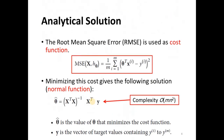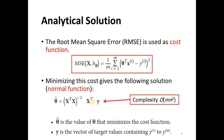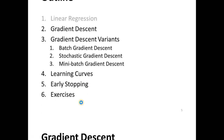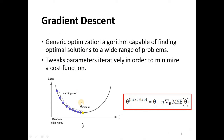We discussed the analytical solution of the linear regression problem using the normal equation. Then we described the gradient descent algorithm, which can be used to solve this problem and other problems. The gradient descent algorithm finds the optimal solution by following the gradient.